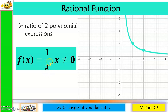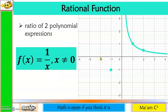For negative values: when x = -1, y = -1; when x = -2, y = -1/2. Continuing this gives the graph in the third quadrant. Rational functions have asymptotes, but we are not going to tackle that in this video.